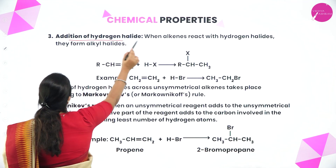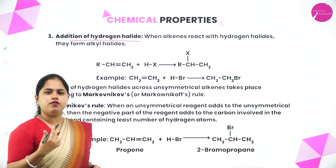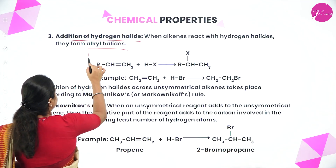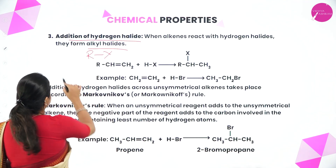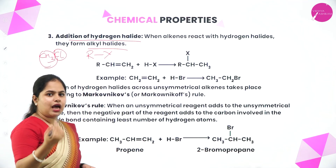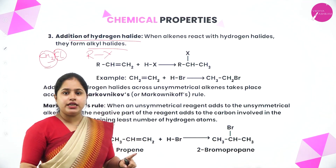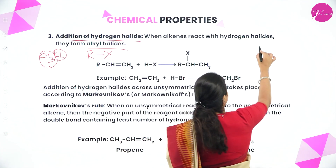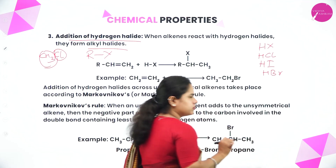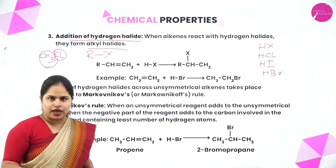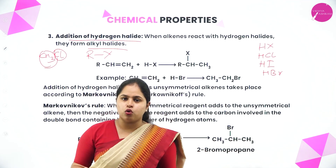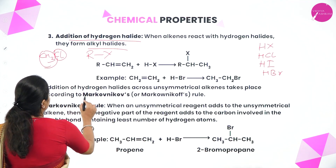Moving on to the next reaction: addition of hydrogen halide. This is a very important reaction. When alkenes react with hydrogen halides, they form alkyl halides (general representation RX, e.g., CH3Cl). Hydrogen halide is represented as HX — it can be HCl, HI, HBr, etc. This reaction follows a very important rule called Markovnikov's rule, because in HX there is an electronegativity difference between hydrogen and the halogen.